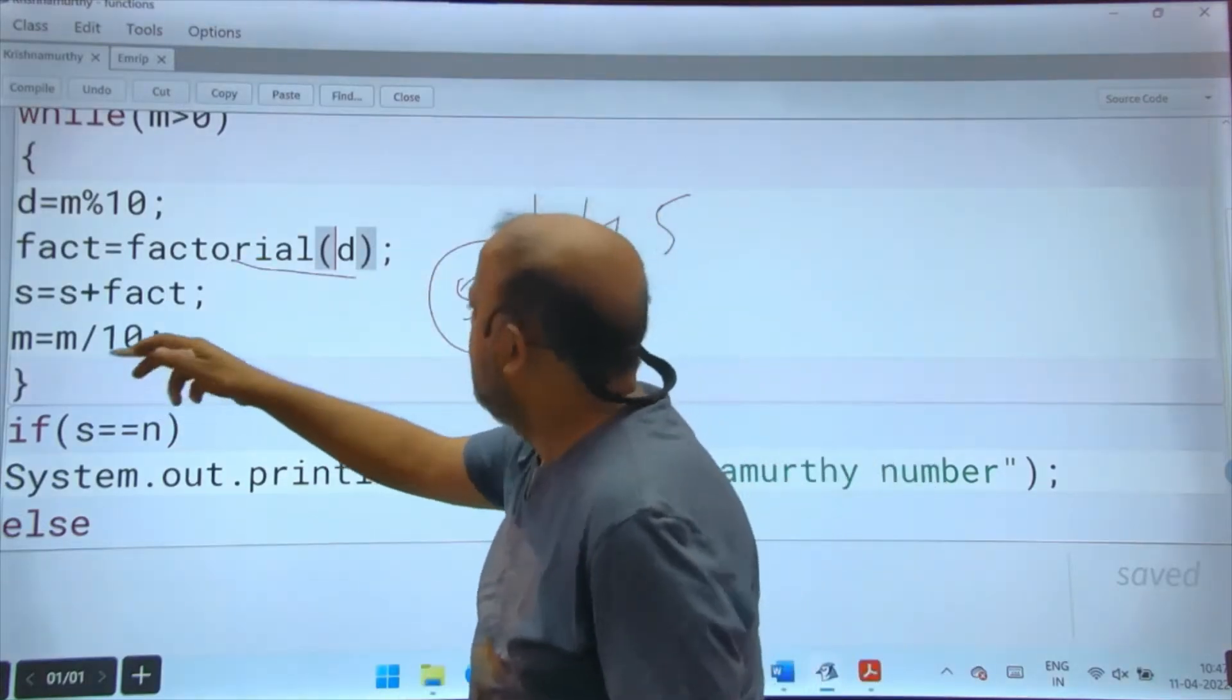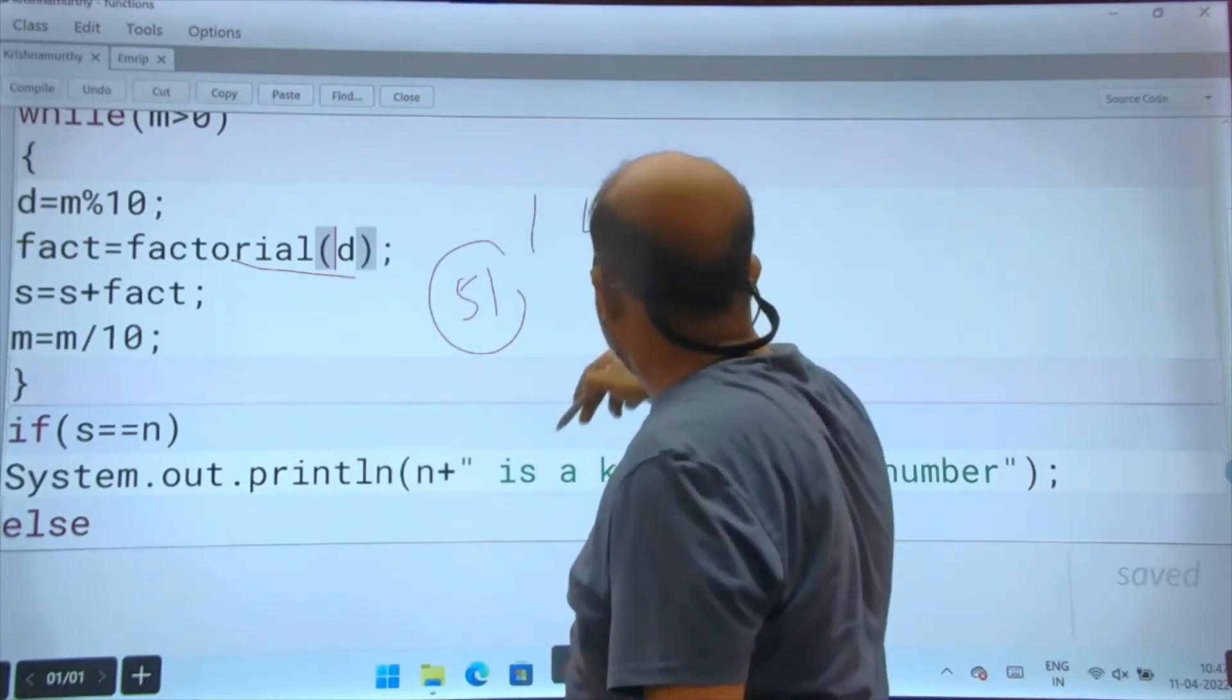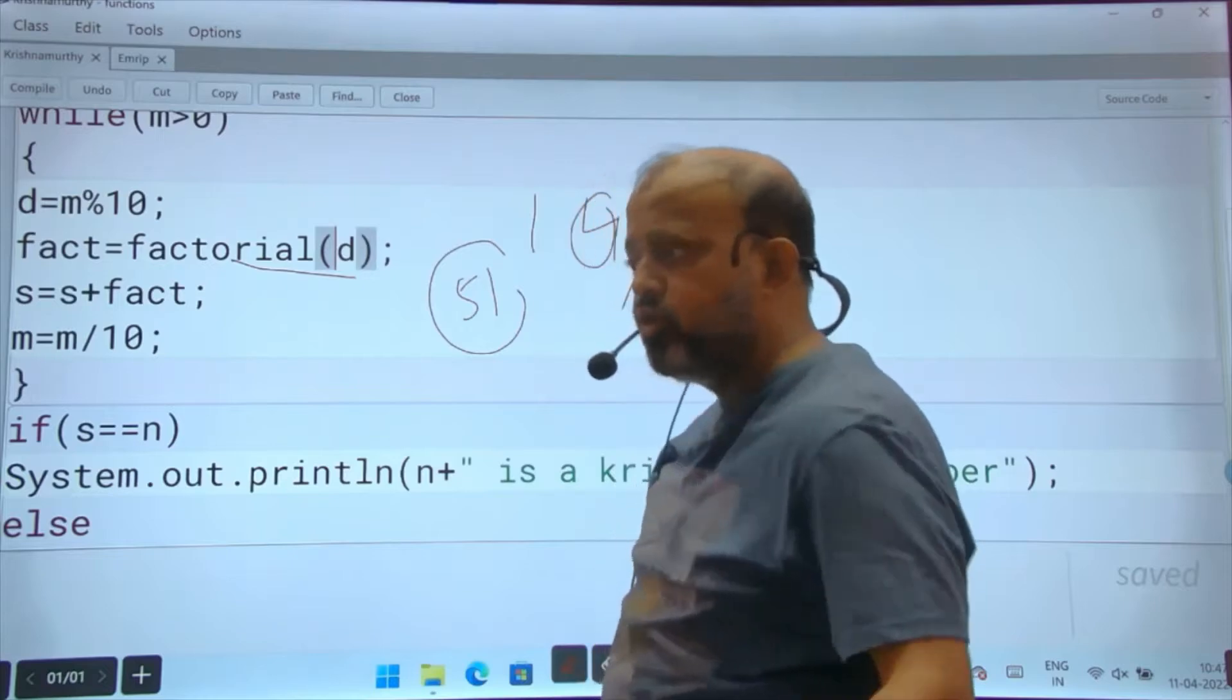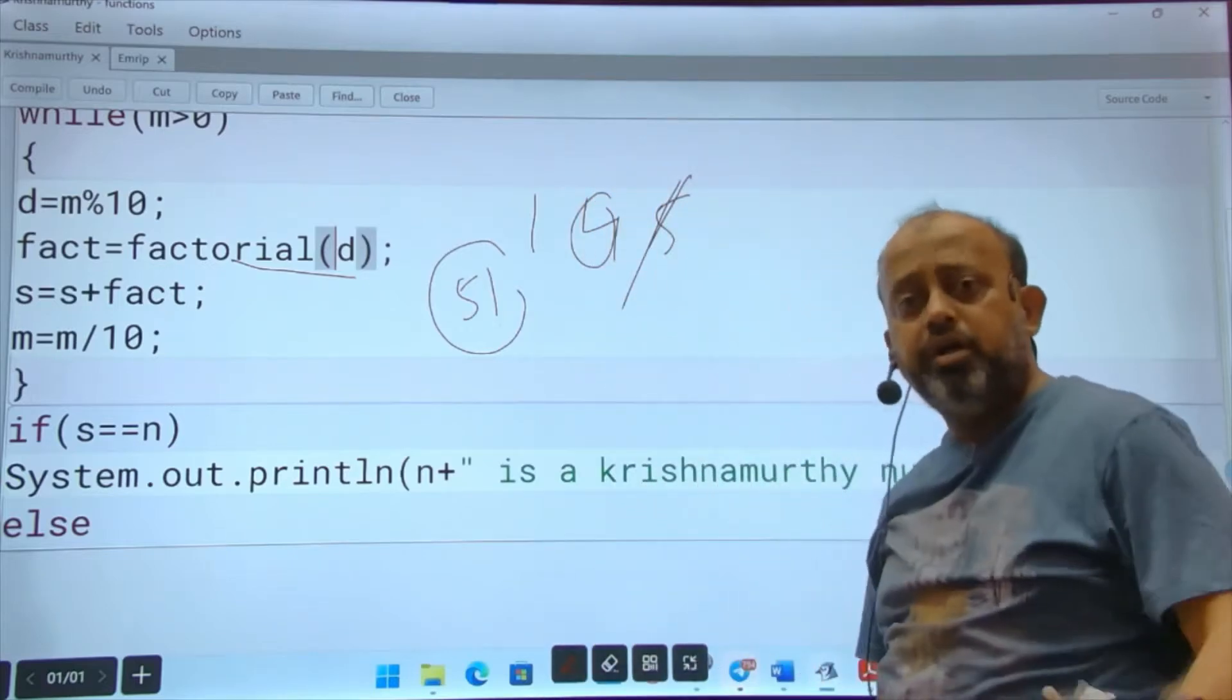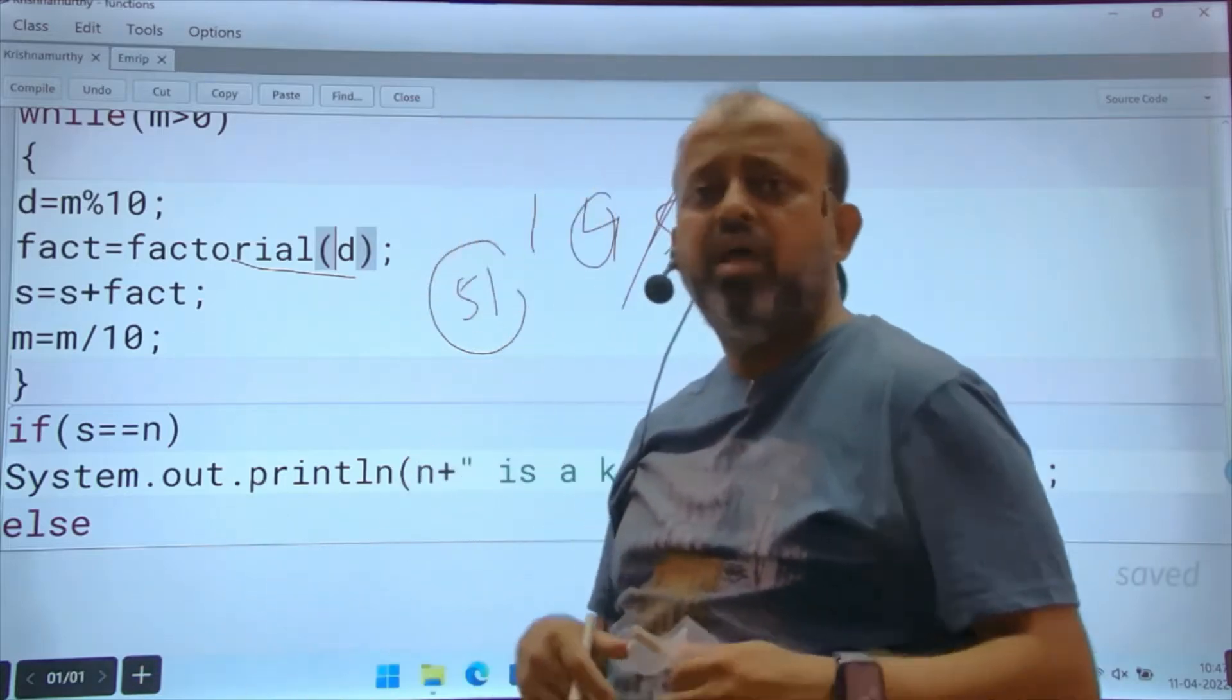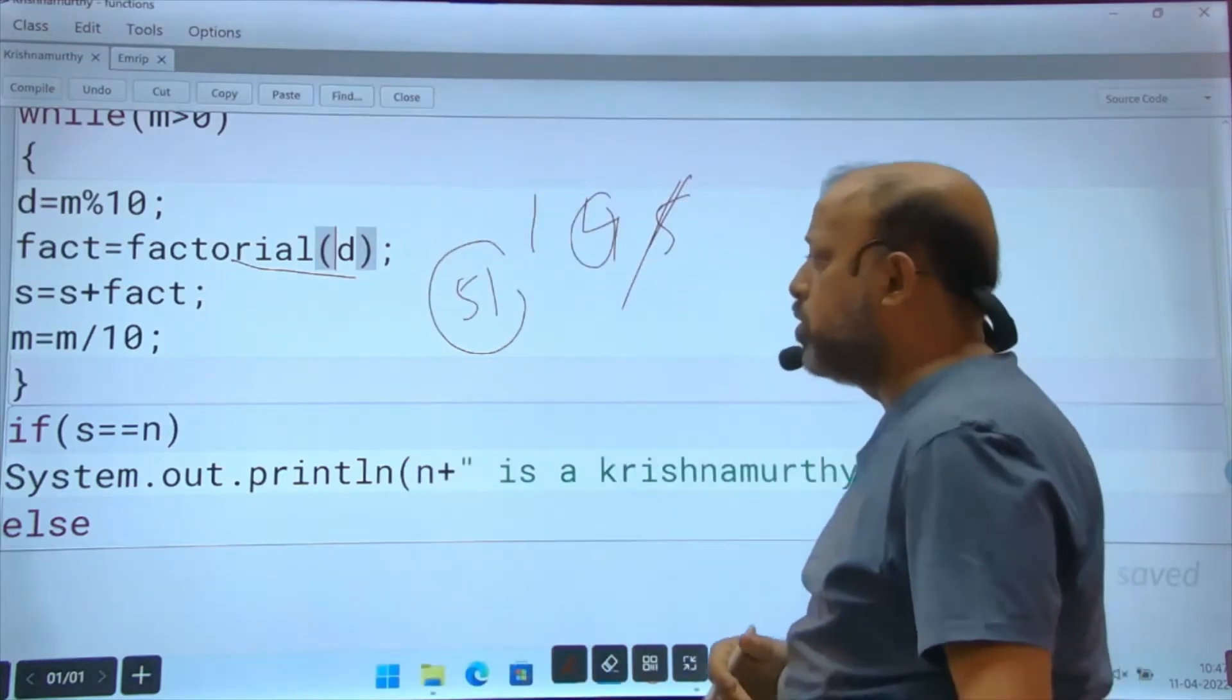Next time m will remove this, d will have four, you will have four factorial. So this is the advantage of return type - from void function, return type functions have more advantage and its uses are more.